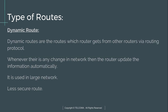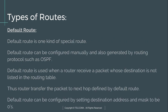Dynamic routes are routes which routers get from other routers via routing protocols, meaning dynamic routes are configured automatically in the network. Whenever there is any change in the network, the router updates the information automatically. Dynamic routes are used in large networks and are a less secure route than static routes.